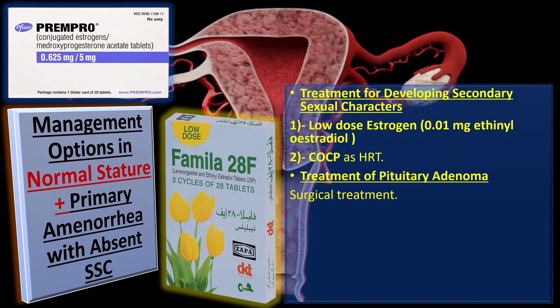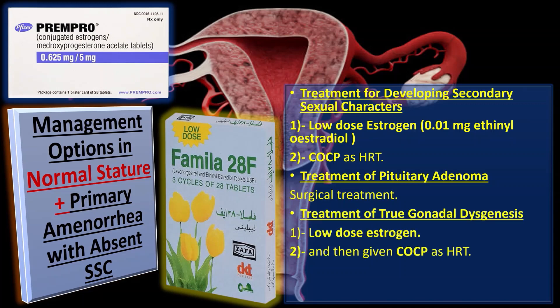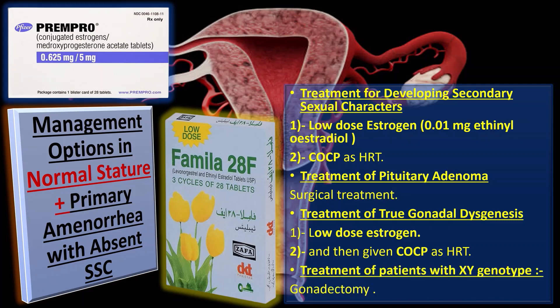Pituitary adenoma may require surgical treatment. Patients with mixed gonadal dysgenesis are made sexually mature with low-dose estrogen and then given combined oral contraceptive pills as HRT. Patients with XY genotype require gonadectomy.